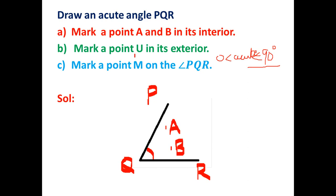Then I have to mark a point U in its exterior. Exterior means outer region of this angle. So I can take a point here and mark this as U.